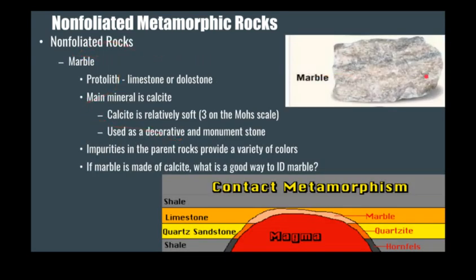Here's some marble. Its protolith is limestone, so marble contains calcite that has been recrystallized. You can determine if it's marble if it doesn't scratch glass and if it fizzes with hydrochloric acid — that's a good indicator you're working with marble. You've probably seen a lot of bathrooms have marble, and it comes in a huge variety of colors.